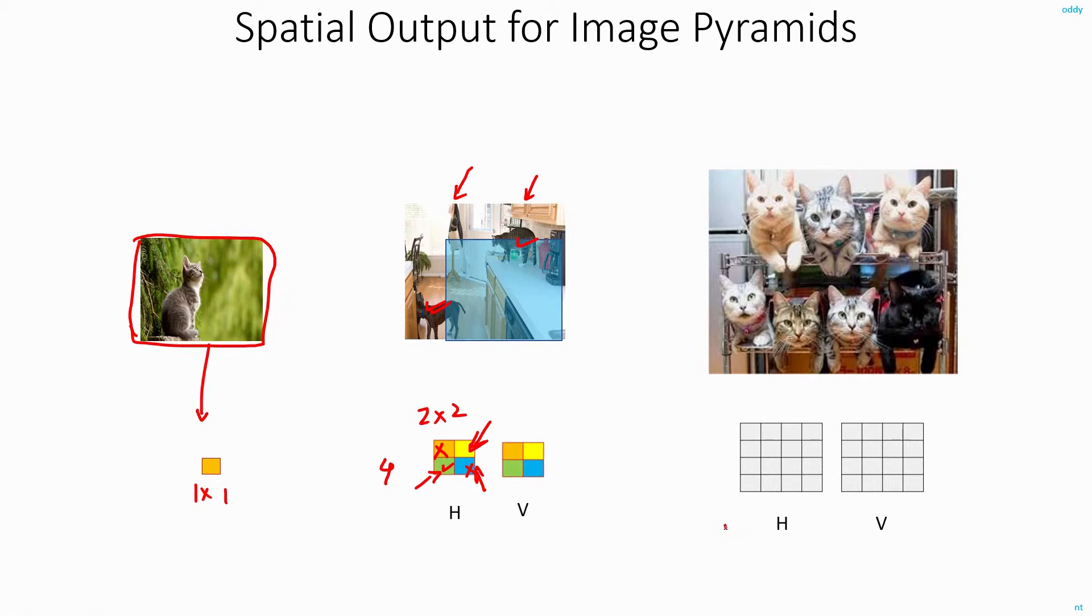And with this 4x4 spatial output, you will be able to detect up to 16 objects at different locations. For example, at these locations, you will be able to detect these different cats. So that's the meaning of this 4x4 output - at different locations, it will tell you what kind of object is there.